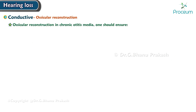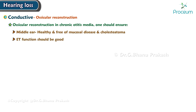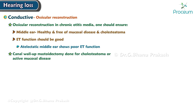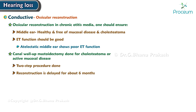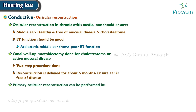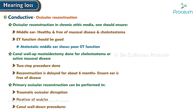At the time of ossicular reconstruction in chronic otitis media, one should ensure the middle ear is healthy and free of mucosal disease and cholesteatoma, and that Eustachian tube function is good. In cases of canal wall-up mastoidectomy done for cholesteatoma or active mucosal disease, a two-step procedure is done where reconstruction is delayed for about six months. Primary ossicular reconstruction can be performed in traumatic ossicular disruption, fixation of ossicles, and canal wall-down procedures when there is no mucosal disease or cholesteatoma.